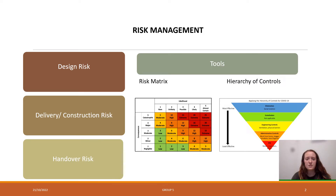A focus on engineering controls, substitution, and elimination hierarchy controls are necessary for this phase, with an urgency for procurements of subcontractors and construction materials, along with the stakeholder environmental management plans. Finally, our team were hoping to manage the risks during the handover by recording and documenting all testings and defects, gaining approvals for final building operations and commissioning of project deliverables.